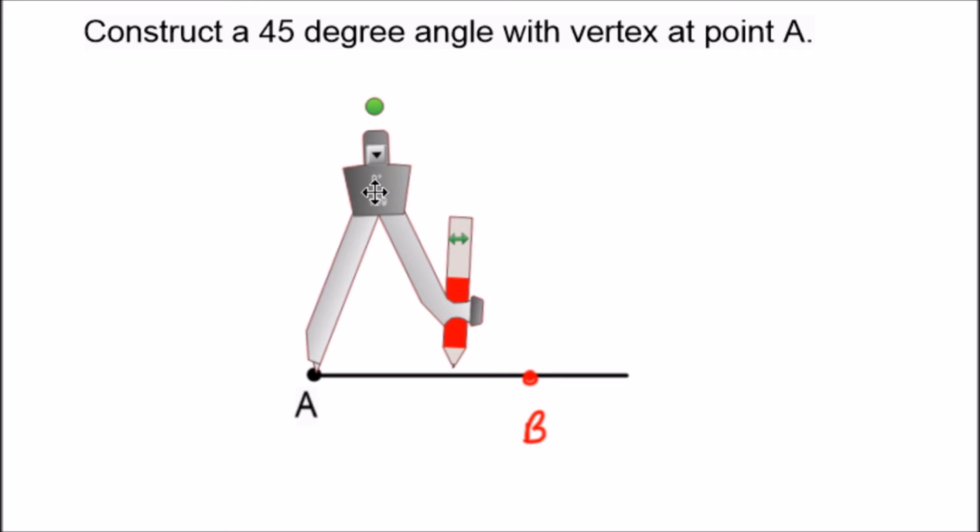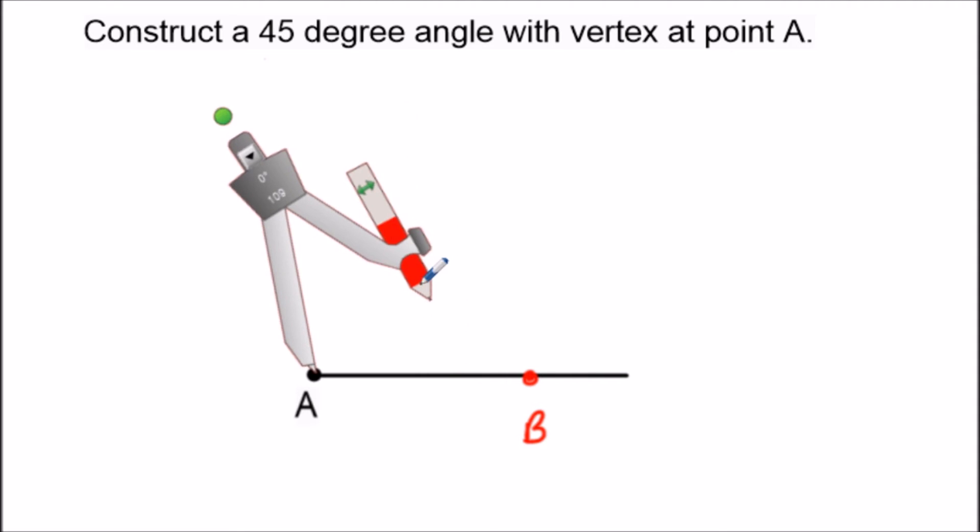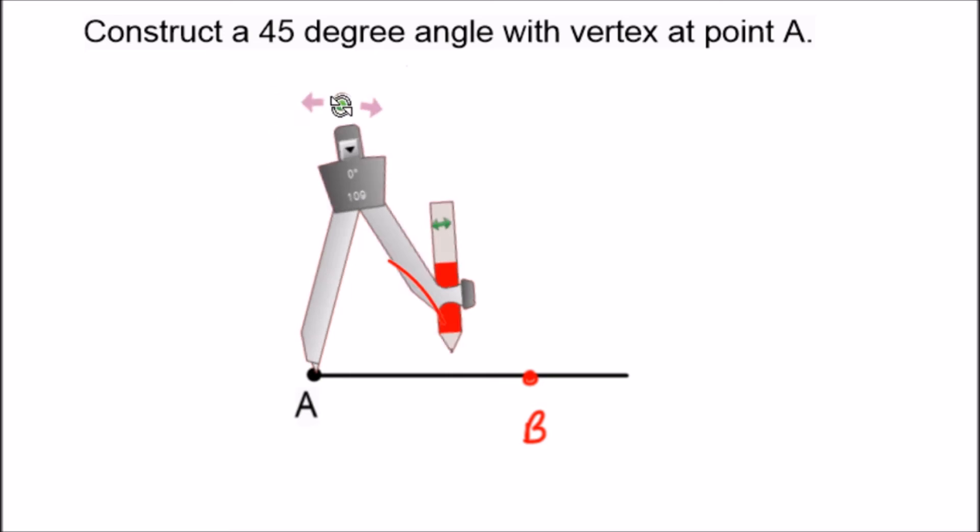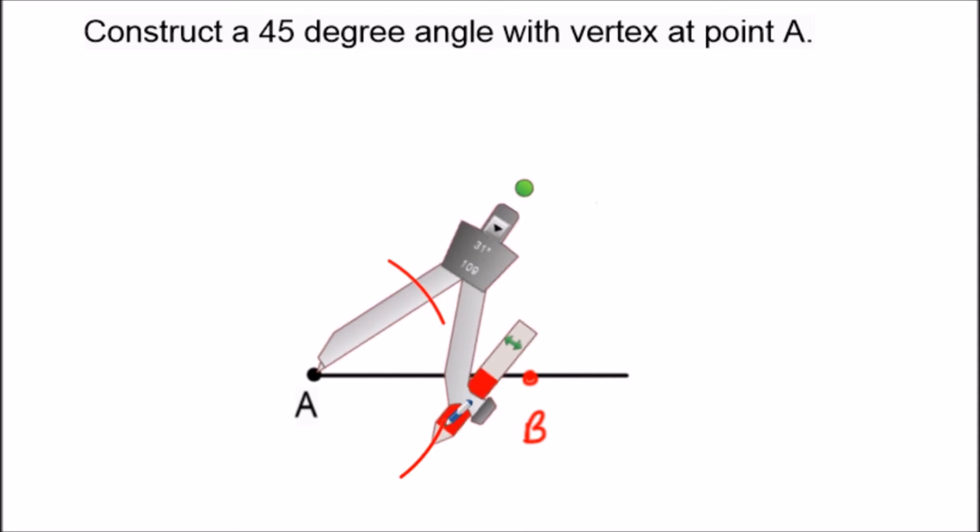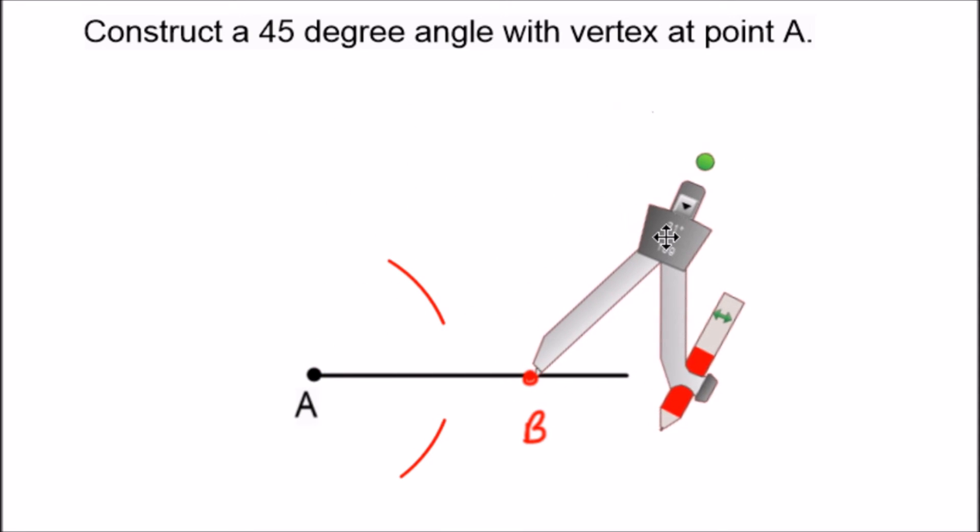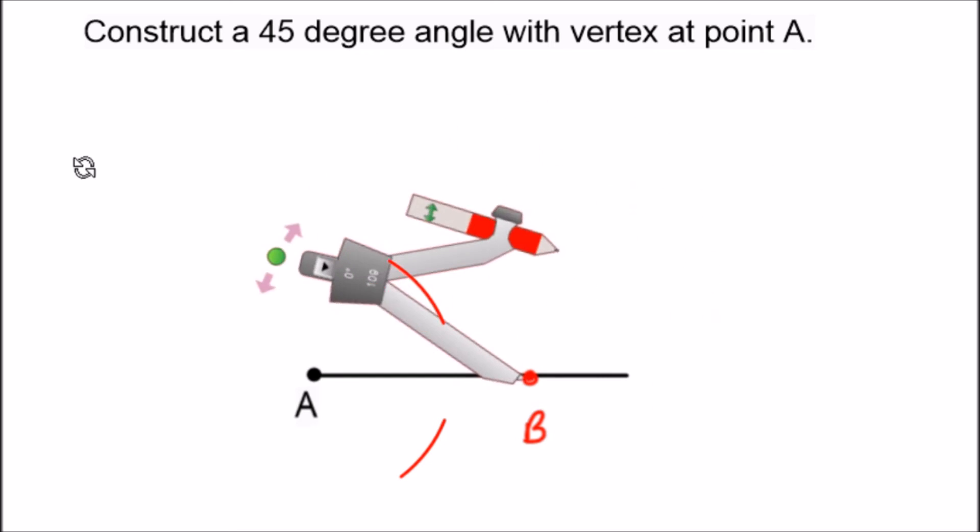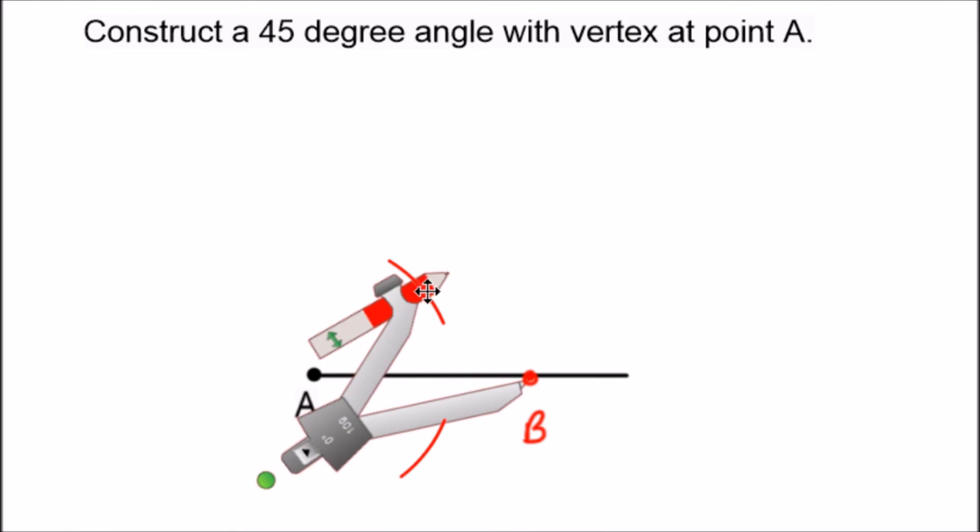So we set the compass to a little bit more than halfway from A to B and we swing an arc above and we swing an arc below and we repeat this process from point B. So let's just get this set here, so we swing it above and we have one intersection point and now we have our second.